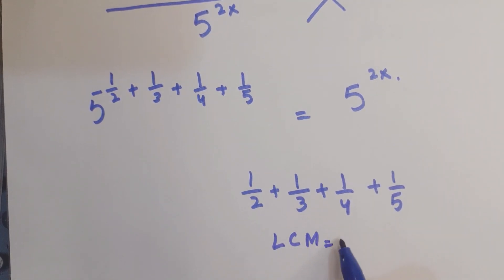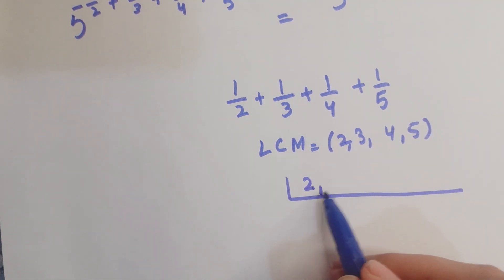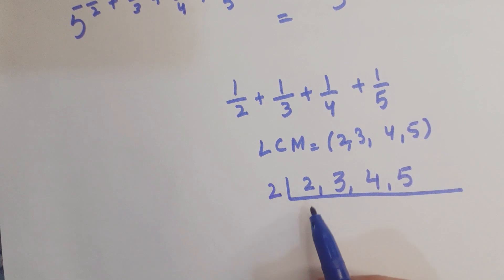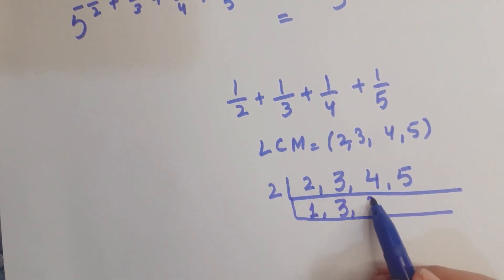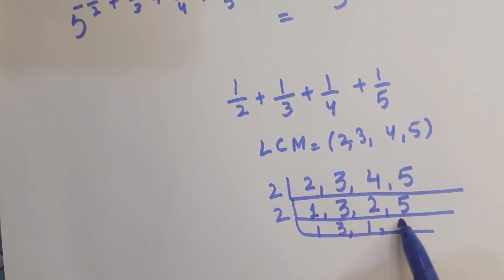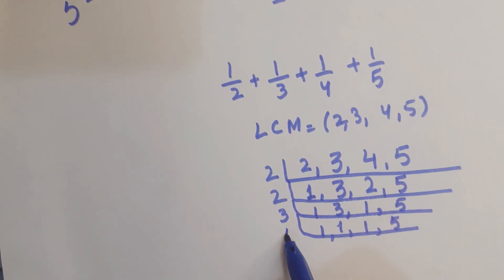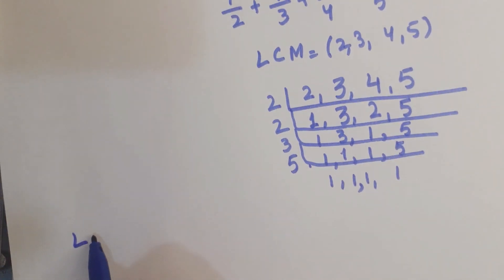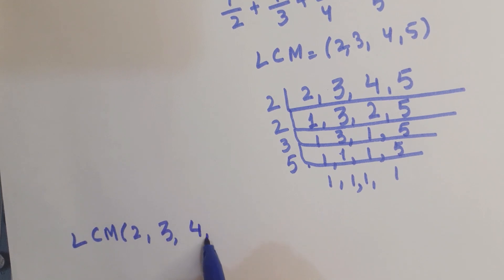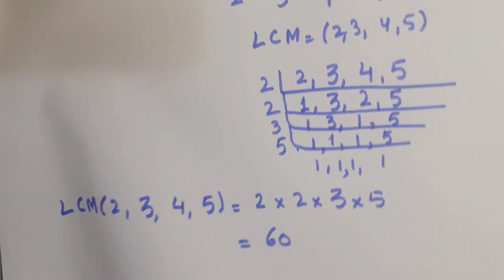For taking the LCM of 2, 3, 4, and 5, just divide by 2 — here we get 1, 3, 2, 5; next again divide by 2 — 1, 3, 1, 5; now again divide by 3. So the LCM of 2, 3, 4, and 5 is equals to 2 × 2 × 2 × 3 × 5, which makes 60.